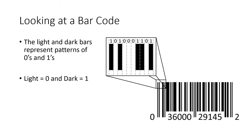When you first look at a UPC code, your initial thought might be that there are some thick black bars and some thin black bars, and there are some wide white spaces and some narrow white spaces, and it might seem a little haphazard. But as we zoom in on the barcode, what we're actually looking at is equally spaced patterns of light and dark. This wide white space is actually three light spaces, and this thick black bar is actually two dark spaces. We're going to convert this into a pattern of zeros and ones — each light bar is represented by a zero, and each dark bar is represented by a one. So this entire barcode is actually a big long sequence of zeros and ones.